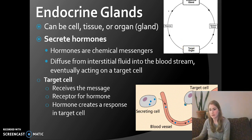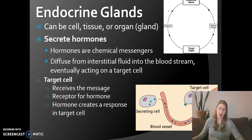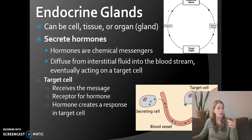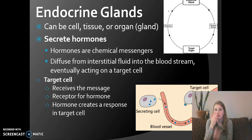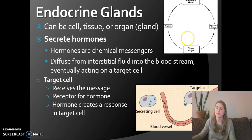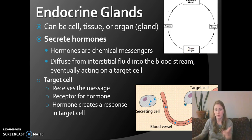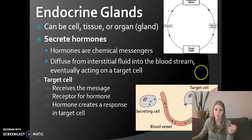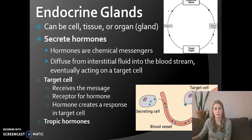For example, oxytocin in pregnant women can be flowing through their entire body — going into their pinky, nose, forehead — but it's not going to do anything there because those areas don't have the right target cells. It will only do something where those target cells are, in the uterus, allowing it to contract and push out the baby.